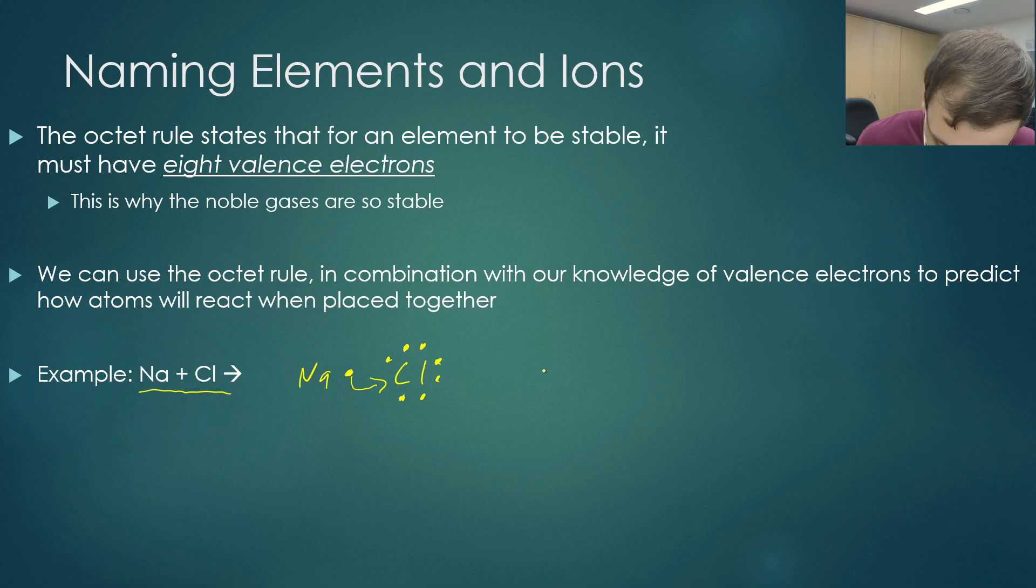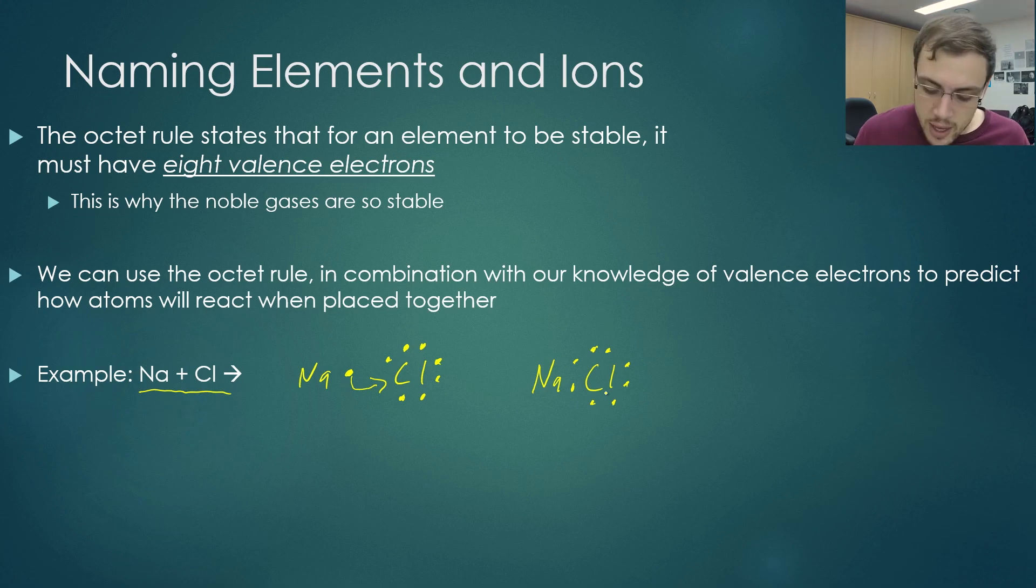What will happen is, is that this sodium will donate its electron to chloride. And then we have sodium chloride. This is called an ionic bond because sodium has formally just gotten rid of its electron. It's gone, you know what? I don't want this. You take it. Whereas chloride has gone, I desperately need one and has taken it from sodium.